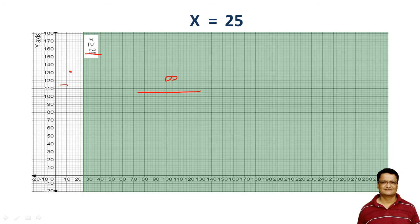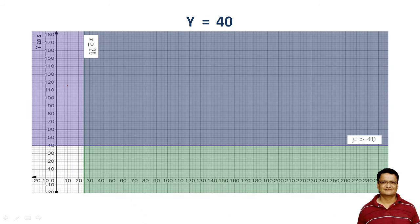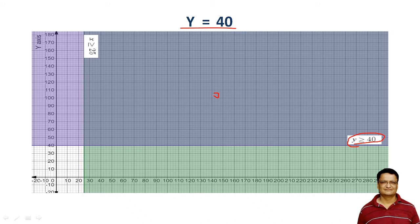Now let us identify the feasible region for all three constraints. The second line is y = 40. If I plot this line, it is a horizontal line, and for this constraint the area above it is the feasible region, while below it is the infeasible region.